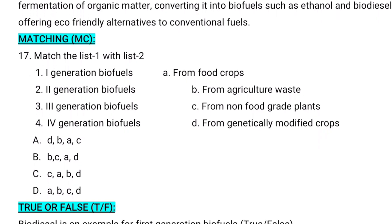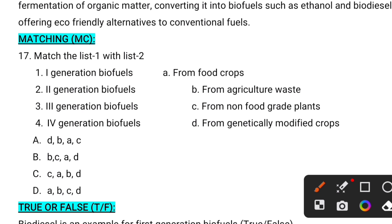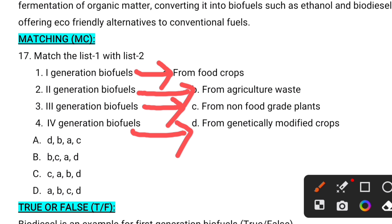The next category is matching type questions — match list one with list two. List one: first generation biofuels, second generation biofuels, third generation biofuels, fourth generation biofuels. First generation biofuels are made from food crops. Second generation biofuels are made from agricultural waste. Third generation biofuels are made from non-food grade plants. Fourth generation biofuels are made from genetically modified crops. The correct answer matches A, B, C, D accordingly.